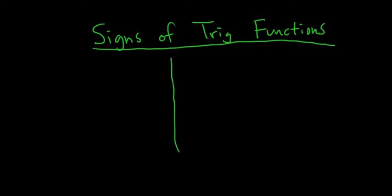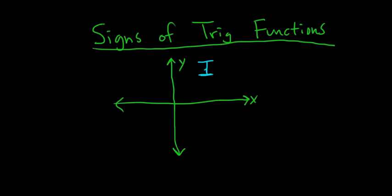So this is the y-axis, and this is the x-axis. In the first quadrant — quadrant 1 — all of the trig functions are positive. So, all.